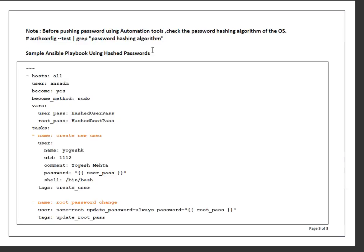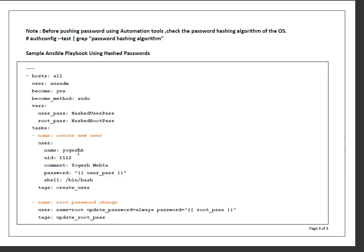To give a more concrete example, I have written a small playbook. This playbook uses two variables: one is user_password and one is root_password. Whenever you create any user you want a standard password set up — you can replace this with your hashed password. In tasks I have two tasks: one is to create a new user. The username is 'yogeshke', this will be the UID, this is the comment section, and password uses a variable. When using a password variable, quote it — that's a requirement. So this variable will call user_pass.